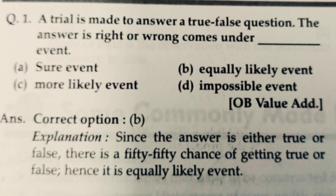Let us see the first question. The first question states that a trial is made to answer a true-false question. The answer is right or wrong. So what will be the correct event — sure event, equally likely event, more likely event, or impossible event? The correct answer will be B. Because in a true-false question, the answer might be true or might be false. Since the answer is either true or false, there is a 50-50 chance, that's why it is an equally likely event.